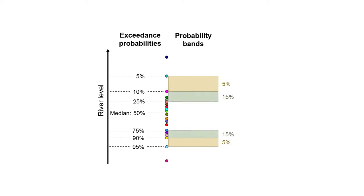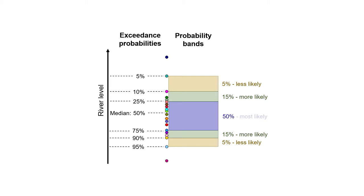Here are the range of river levels within 15% bands. Finally, we add the middle 10 ensemble members, which make up the 50% probability band. We may consider the 5% bands to be less likely to occur, and the 15% bands to be more likely to occur, while the 50% band is the most likely to occur.